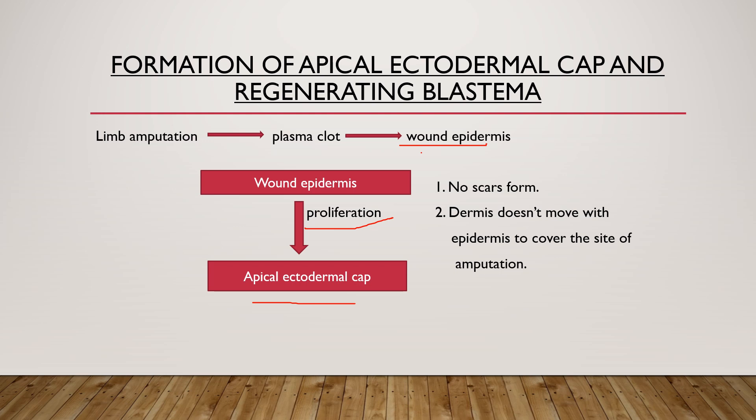The apical ectodermal cap secretes various factors which further lead to the development of the structure that was lost. In the case of salamanders, no scars are formed, unlike in humans where scars are formed. The dermis does not move with the epidermis to cover the amputation site — only the epidermis moves to cover the wound surface and form the wound epidermis.